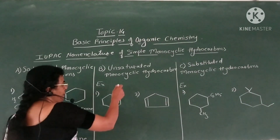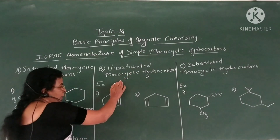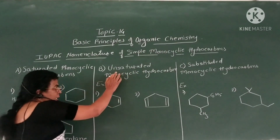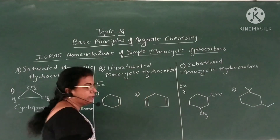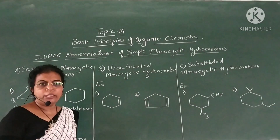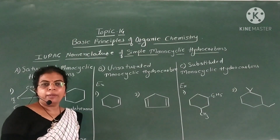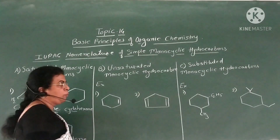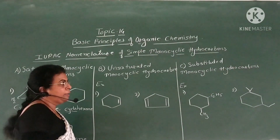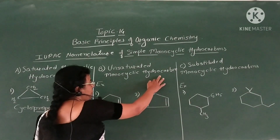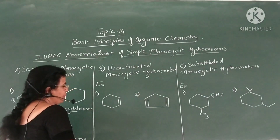Now we are going to see the second type: nomenclature of unsaturated monocyclic hydrocarbons. Unsaturated means the compound contains a carbon-carbon double bond or triple bond, monocyclic means having a single ring, and hydrocarbons means containing carbon and hydrogen atoms.